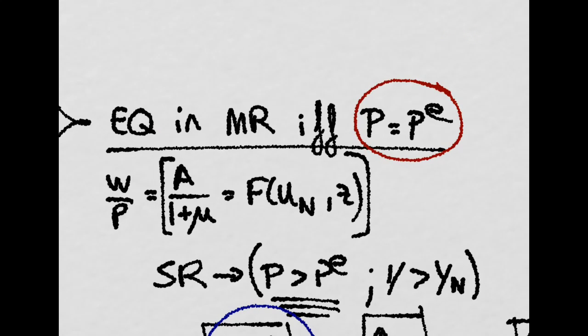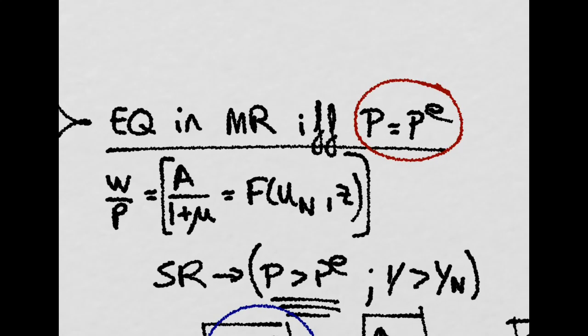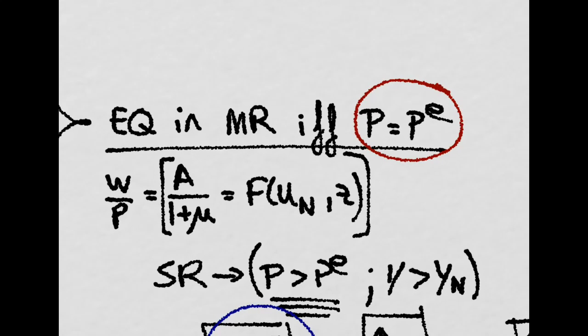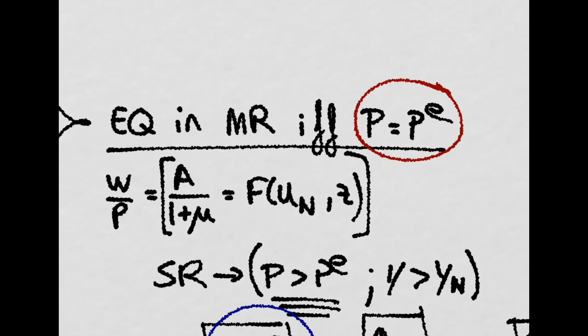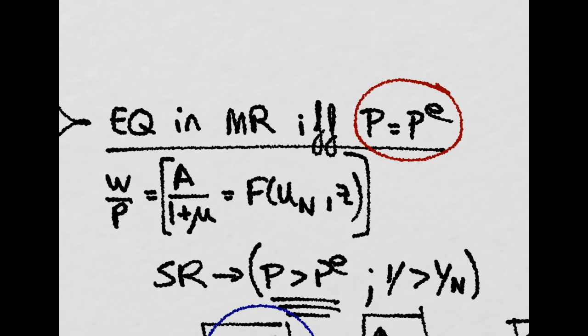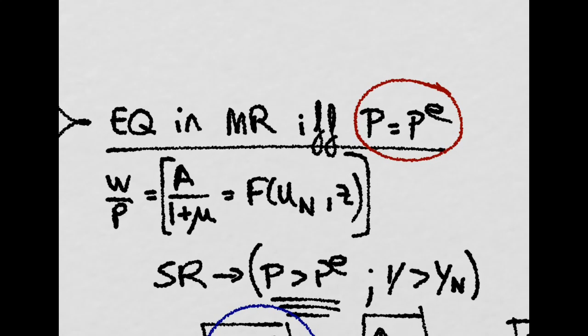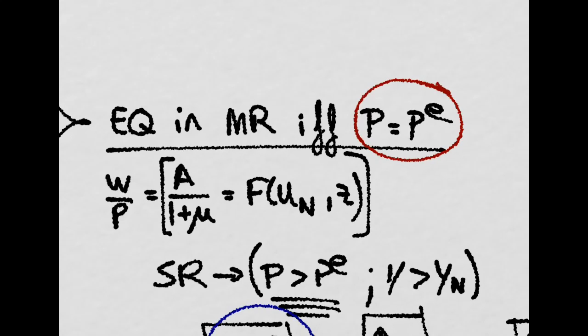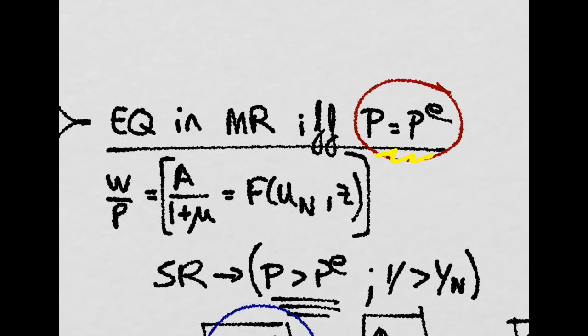And remember we proved that we are at an equilibrium in the medium run, that is, in the AS-AD, in the medium run, if and only if prices equal the expected price level.